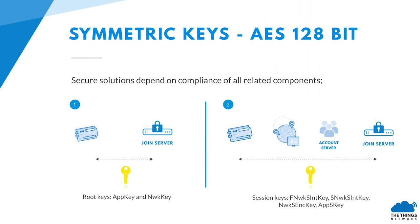These four session keys are symmetric — AES 128-bit keys — and the network and the end device use the same set. The root keys (the app key and the network key) are in the end device and are shared with the join server. The session keys are shared between the end device, the network server, the application server, and the join server. Specifically, the three network session keys are shared between the end device and the network server, and the application session key is shared between the end device and the application server.